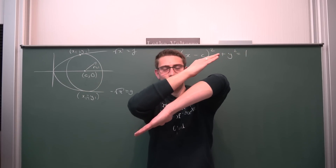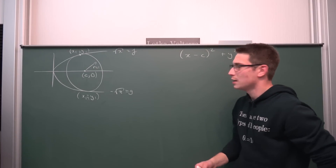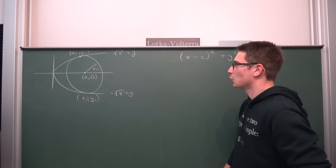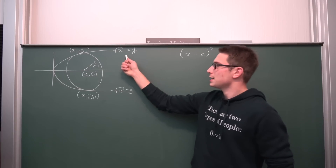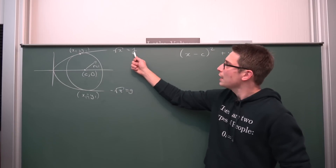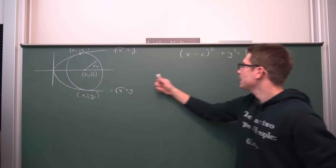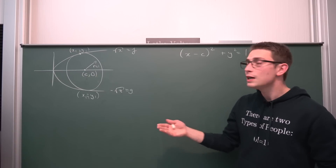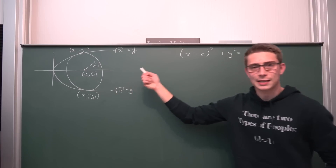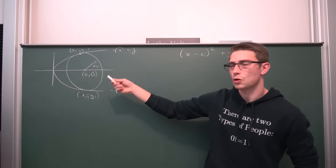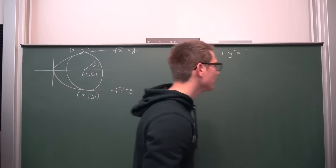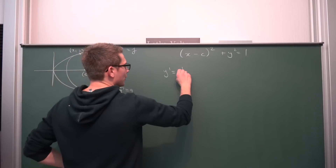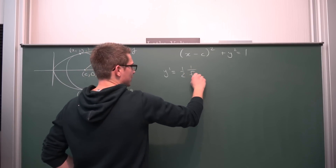If you zoom in infinitesimally small, they have the same slope at the tangent point. So what we're going to do is differentiate — it really doesn't matter which one we do first, let's go with f. If we differentiate our function with respect to x and then differentiate our circle's equation with respect to x, and set their derivatives y′ equal, we get a nice equation. So differentiating f: y′ = (1/2) · x^(−1/2), in other words 1 over 2 times the square root of x.